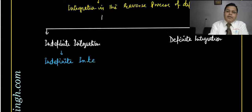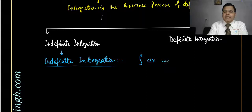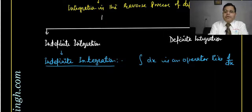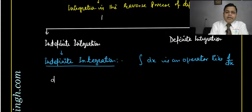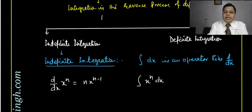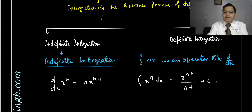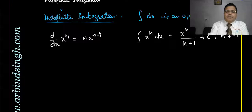In indefinite integration, the integral operator ∫dx is an operator, like d/dx. The symbol ∫ is called the integral. For comparison, if you take d/dx of x^n, that gives n·x^(n-1). For integration of x^n, the power increases and you divide by the new power: x^(n+1)/(n+1) + C. This formula is applicable for all n except n = −1.